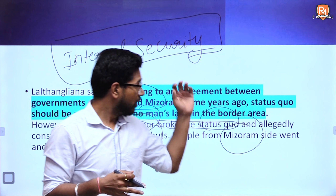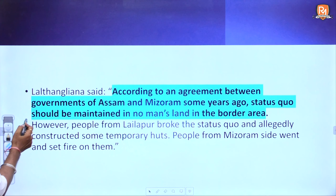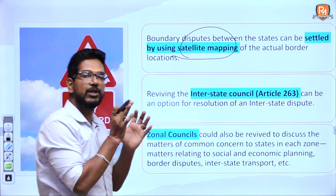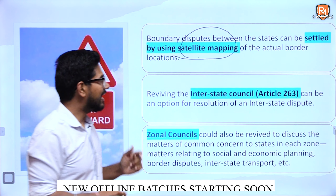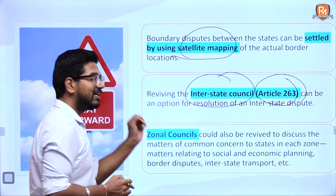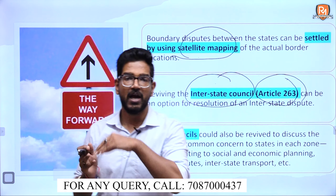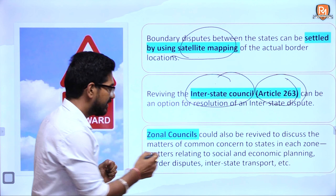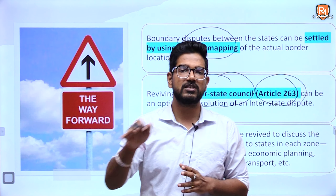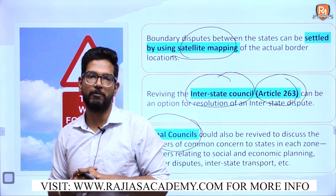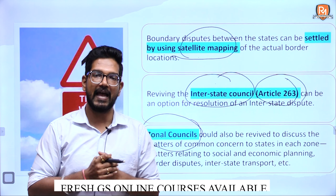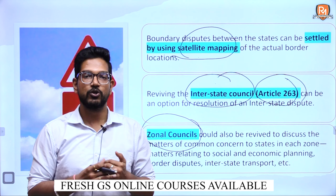According to an agreement between the two state governments, the border area should be a no man's land. However, people from the Lailpur area on the Assam side broke this status quo by temporarily setting up huts in the zone. The Mizoram people then set those huts on fire, further escalating the situation. Recently, explosive blasts were also reported, which is not good for the internal security of India and has become a major security concern.